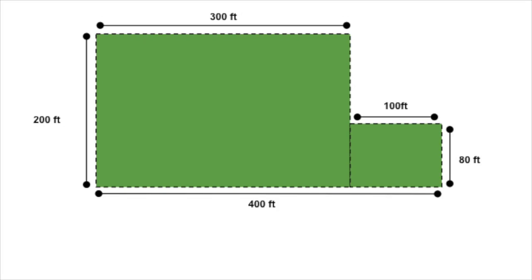Now let's take a look at diagram two here. This is another hypothetical lawn area, but it's not a nice neat rectangle like the last example. So how would we approach this? It's actually not too difficult. Notice that it's 400 feet long on one side and 300 feet long on the opposite side, and then 200 feet long on the left side and 80 feet long on the far right side.